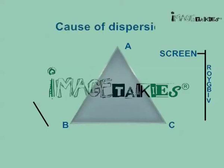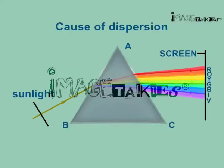Cause of dispersion: The refractive index of a medium is slightly different for different colours. When passing through a prism, the various colours are refracted by slightly different amounts. Dispersion is thus caused on account of different refractive indices of the medium for different colours.